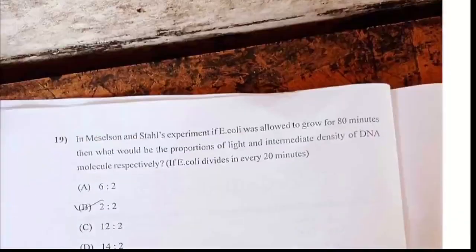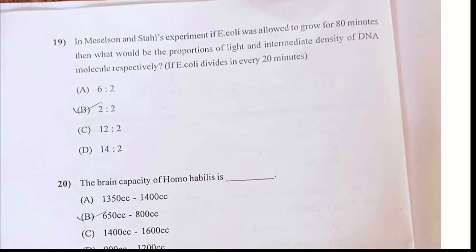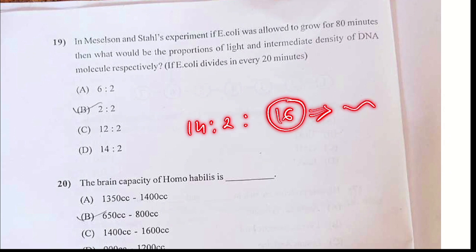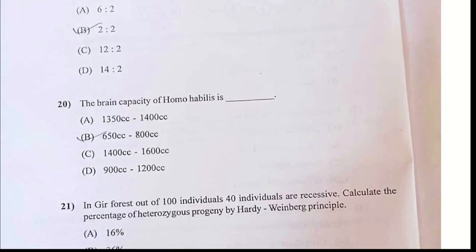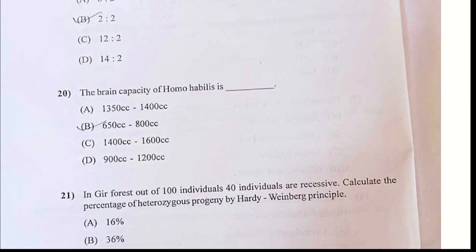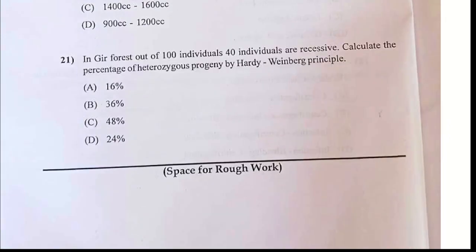Now look at the next MCQ. Going up to T — there are 16 strands. In these strands, 2 are original and the remaining 14 are duplicates. That is why your answer should be D. Brain capacity of Homo habilis is 650 cc to 800 cc.